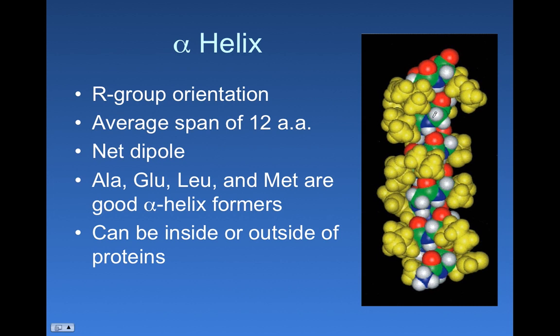Now if you look at this model over on the right side of the slide, the R groups are painted yellow in this particular model. And the core of the peptide chain, the peptide bond and other stuff, are green and blue with the hydrogens as white.